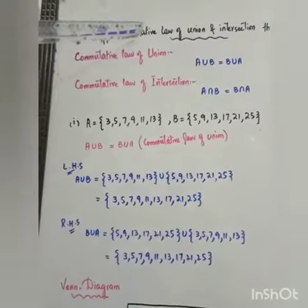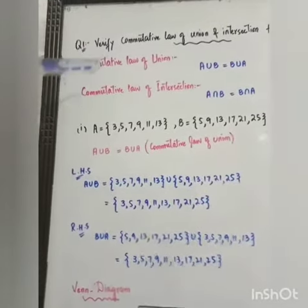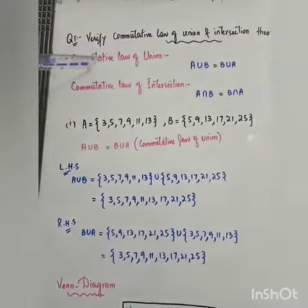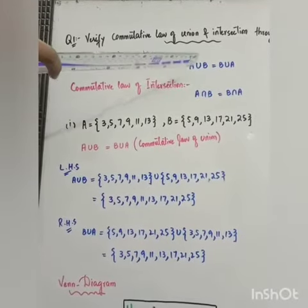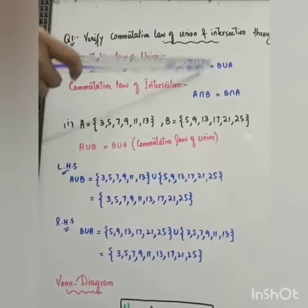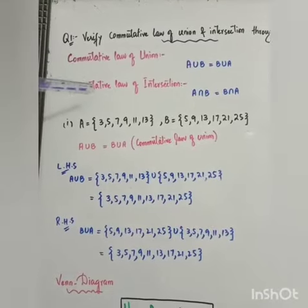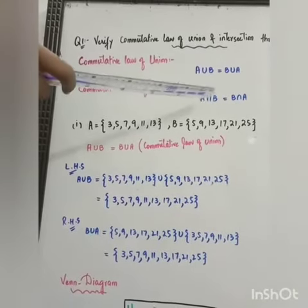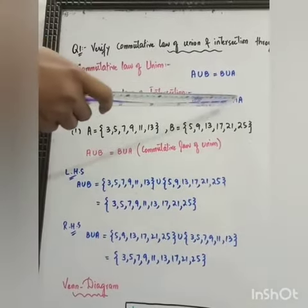First of all, you must know what is commutative law of union and intersection. Commutative law of union: A union B equals B union A. Commutative law of intersection: A intersection B equals B intersection A.